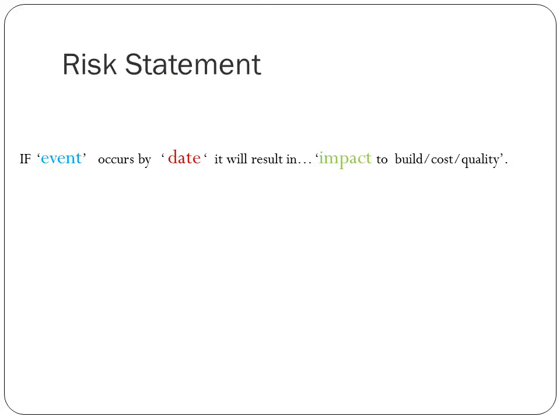We begin by identifying a risk, and every risk is identified by a risk statement. If a specific event occurs by a given date, it will result in a specific impact — an impact on the construction project itself, the scope, the work breakdown structure, the costs, or the quality of the project itself.